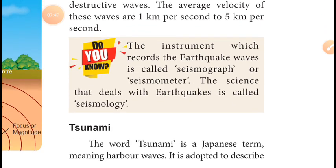To summarize: earthquakes originate at the focus and the waves reach the epicenter. There are three types of waves — primary wave (P wave), secondary wave (S wave), and surface L wave. Their speeds and the mediums through which they travel have all been explained.